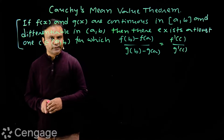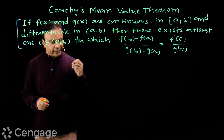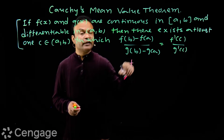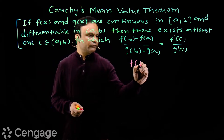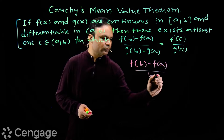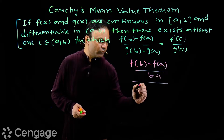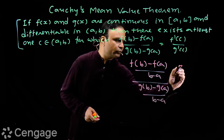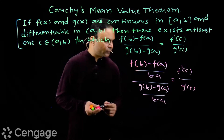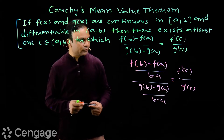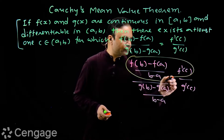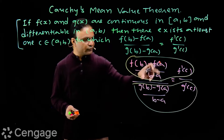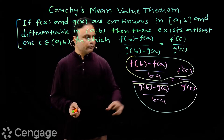Now from this expression, generally students think this is a ratio of LMVT or mean value theorem for functions f(x) and g(x). What they do is divide numerator and denominator by (b minus a), so we have f(b) minus f(a) upon (b minus a), divided by g(b) minus g(a) upon (b minus a), equal to f'(c) upon g'(c). The argument students put is that this is the mean value theorem statement for f(x) and this is the mean value theorem statement for g(x), so we are dividing these two statements. But this is not always true.